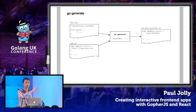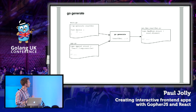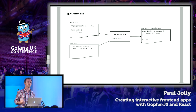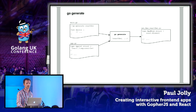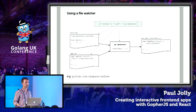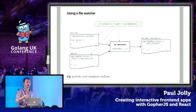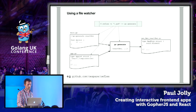I use code generation the whole time, and I actually have a file watcher that's looking to see whenever any of my files change, and then automatically reruns Go Generate as I save a file. So that just enables me to really streamline my development process. With that brief sojourn to Go Generate completed, let's take a look at writing our own React component, because that's what it's all about today.